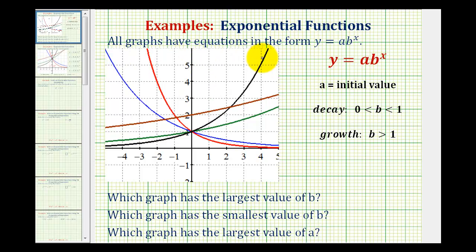All of the graphs have equations in the form y equals a times b to the x, which means they're all exponential functions. We want to determine which graph has the largest value of b, which graph has the smallest value of b, and which graph has the largest value of a.